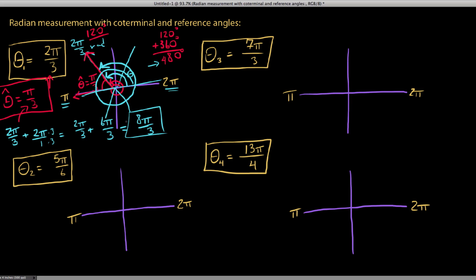For the positive coterminal angle we got 8π/3. For the negative coterminal angle: 2π/3 minus 2π equals 2π/3 minus 6π/3, which gives negative 4π/3. In other words, we went 4 of these π/3 pieces back in a clockwise fashion and landed in the same spot.